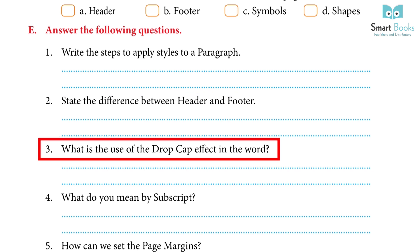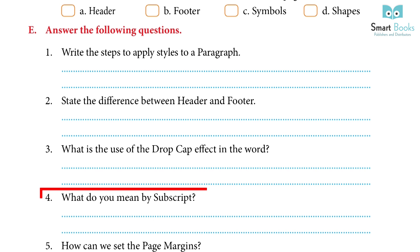3. What is the use of the drop cap effect in Word? Answer: A large capital letter known as a drop cap, sometimes called a dropped capital, is used as a decorative element at the start of a paragraph or section. A drop cap is often two or more lines in length. 4. What do you mean by subscript? Answer: A subscript is a character placed slightly below the baseline, making it appear smaller. It is used in abbreviations related to computers, phones, programming, typography and word processors — for example, CO2.